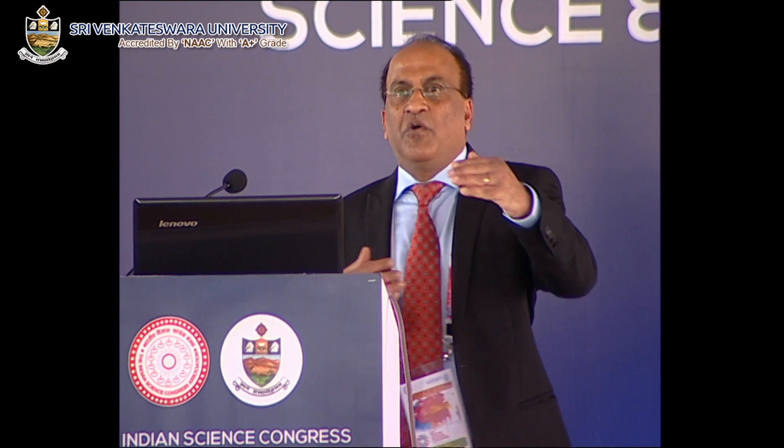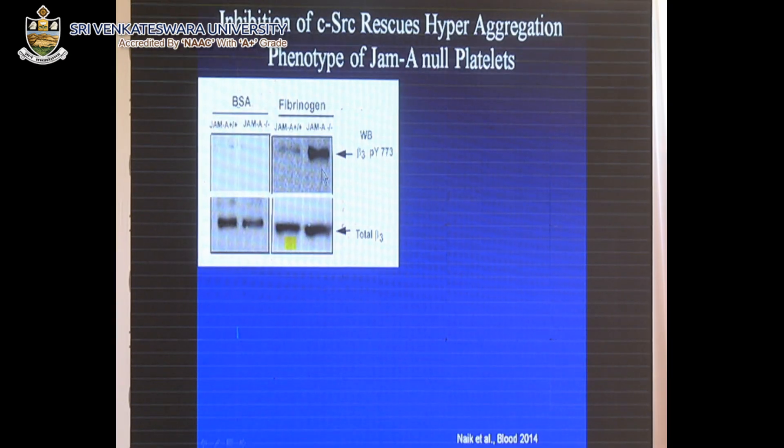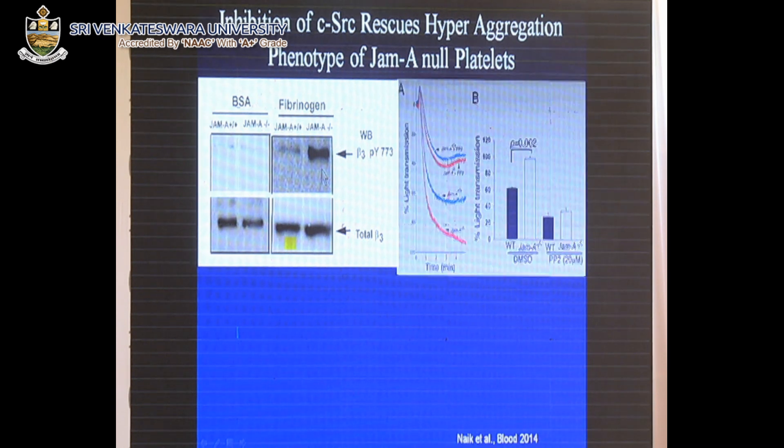We then investigated the mechanism by which JAM-A keeps the integrin in an unactivated state. We showed that integrin activation requires phosphorylation: in wild-type mice you get phosphorylation, but in the knockout mouse phosphorylation is much greater. That is how JAM-A blocks integrin activation.